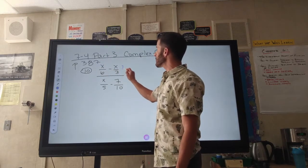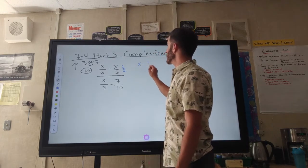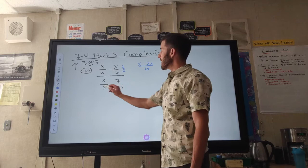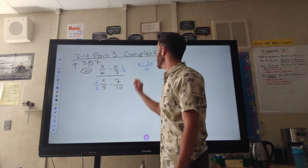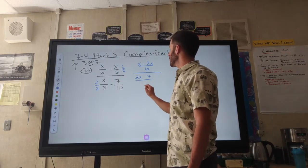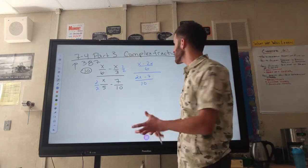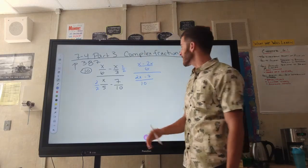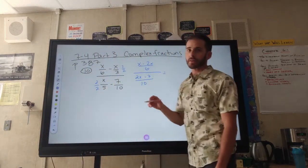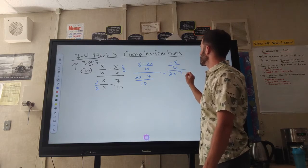The denominators are 6 and 3, so if I multiply x over 3 by 2 over 2, I'll get a common denominator. That gives me x minus 2x all over 6. For the denominator of the complex fraction, x over 5 and 7 over 10 — multiplying x over 5 by 2 over 2 gives a common denominator, so that becomes 2x minus 7 all over 10. Since x minus 2x is just negative x, I now have negative x over 6 on top and 2x minus 7 over 10 on the bottom.